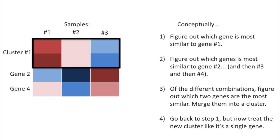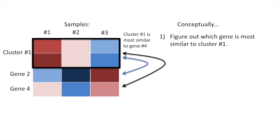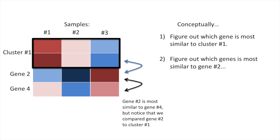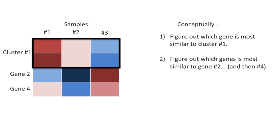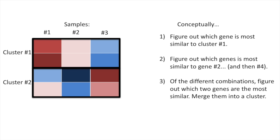Step four: go back to step one, but now treat the new cluster like it's a single gene. So in step one, we figure out which gene is most similar to cluster number one. Cluster number one is most similar to gene number four. And we figure out which gene is most similar to gene number two — in this case, gene number two is most similar to gene number four. We also compare gene number two to cluster number one, and then do the same for gene number four. Of the different combinations, genes two and four are the most similar, so we merge them into a cluster.